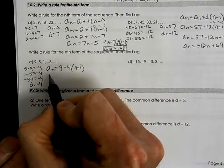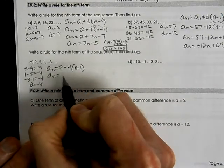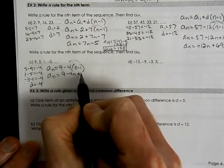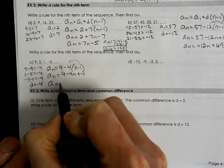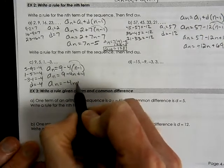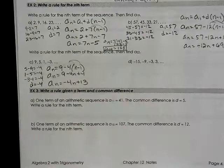So then we can clean this up and say A of n equals 9 minus 4n plus 4. So the best way that we could write this would be negative 4n plus 13.